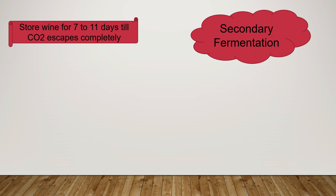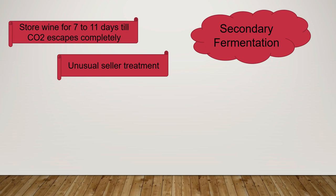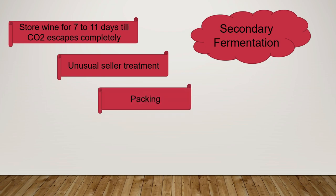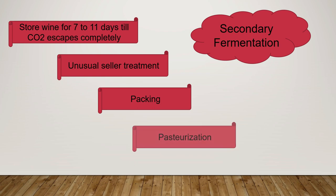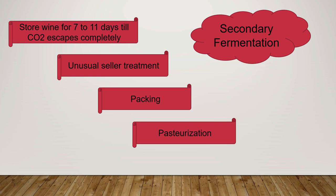In secondary fermentation, the filtered wine is stored for 7 to 11 days until CO2 escapes completely. When we carry out wine fermentation we get ethanol, carbon dioxide, and by-products. After filtration we get a clear wine, which is kept for 7 to 11 days until the carbon dioxide has completely escaped. Then unusual cellar treatment is carried out, after which the wine is packed in bottles and pasteurized. The whole bottle goes through pasteurization and is then open for sale.